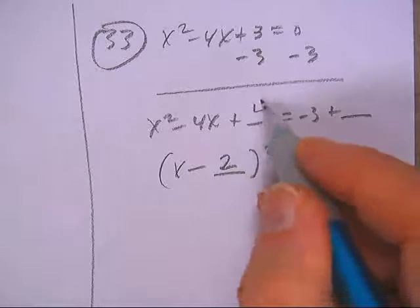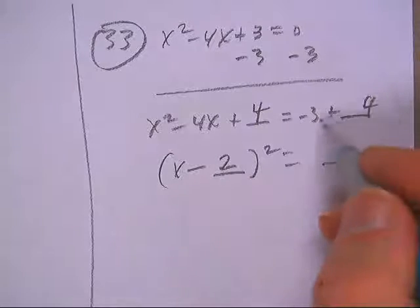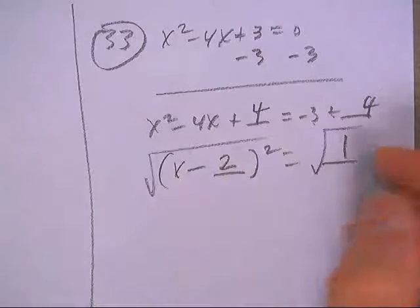Half of 4 is 2, 2 squared is 4. 4 on that side, 4 on this side. Negative 3 plus 4 is 1. Square root of both sides.